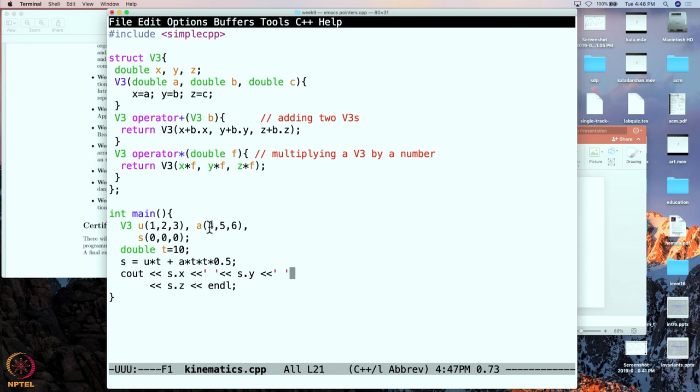So ut we should expect in the x coordinate 10 over here and then half a t squared. So half of a in the x coordinate is going to be 2 and t squared is 100. So this is going to contribute 200 plus 10, so 210.